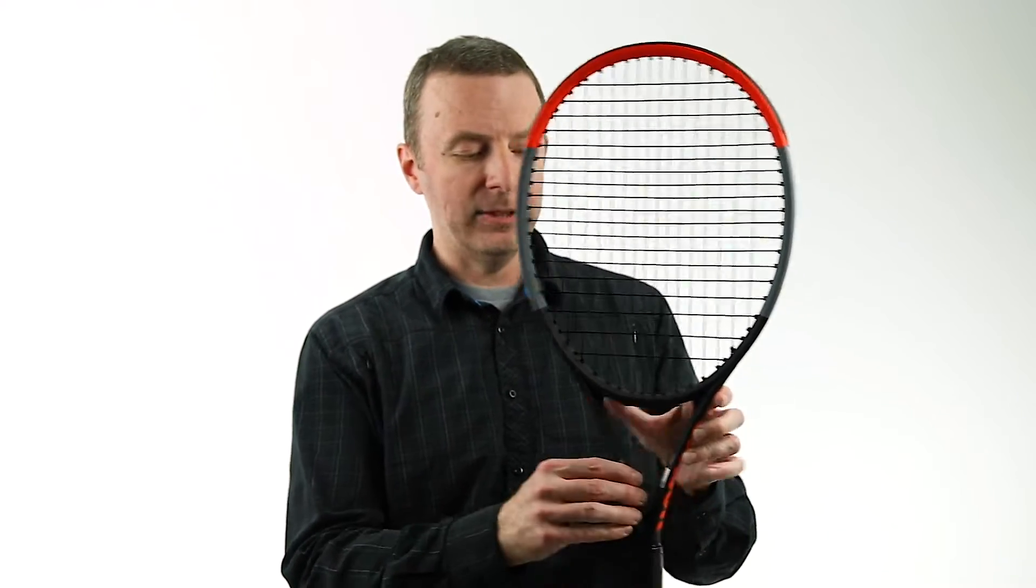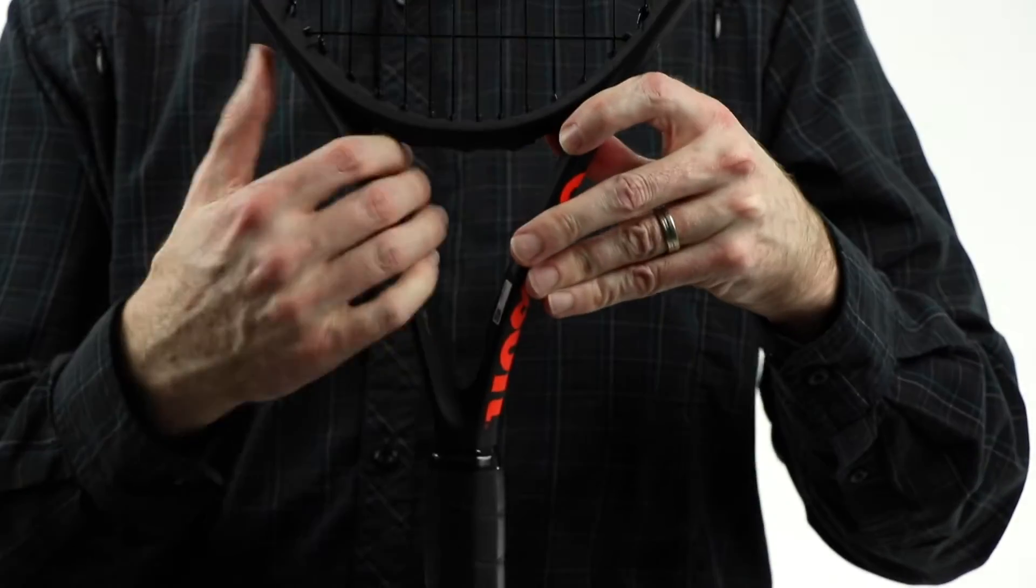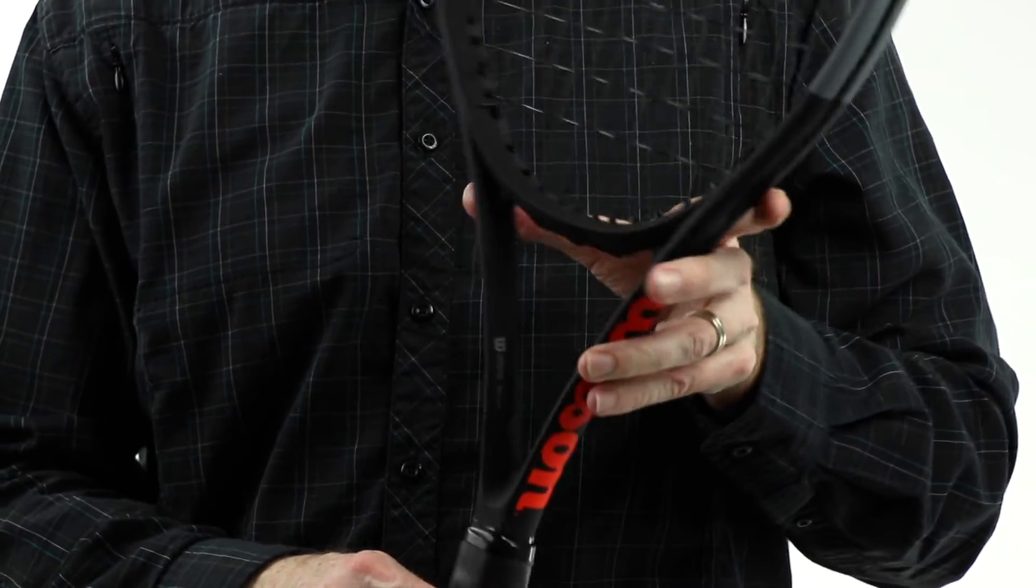However, still very stable, still has nice pop. And that's thanks to what they call stable smart. It's a bridge design here that really allows the racket to flex in the dimensions that Wilson engineered it to flex and to remain stable in dimensions that it wants it to remain stable. So you get a nice marriage of flexibility and stability.